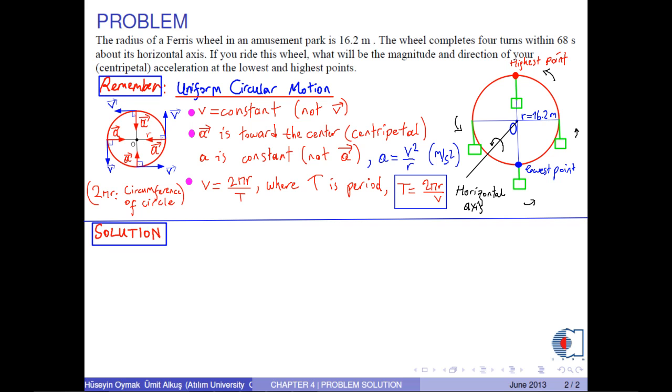Let's solve the problem. We are given r as 16.2 meters. The wheel completes 4 turns within 68 seconds, then one turn is 17 seconds, which is the period.